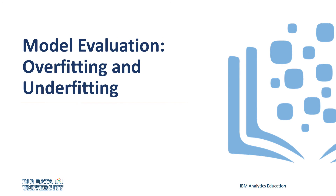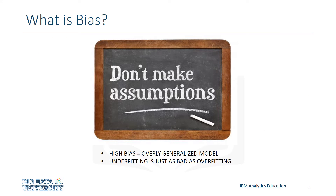Hello. In this video, we'll be covering overfitting and underfitting of models. Bias is the error that results from incorrect assumptions and relations that the model makes about the data. In statistics and probability theory, bias occurs where the expected value of an estimator differs from the true underlying parameter which is being estimated.